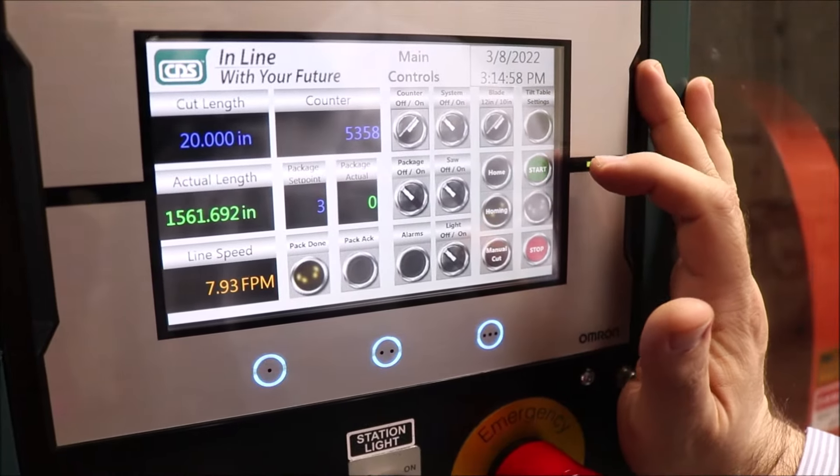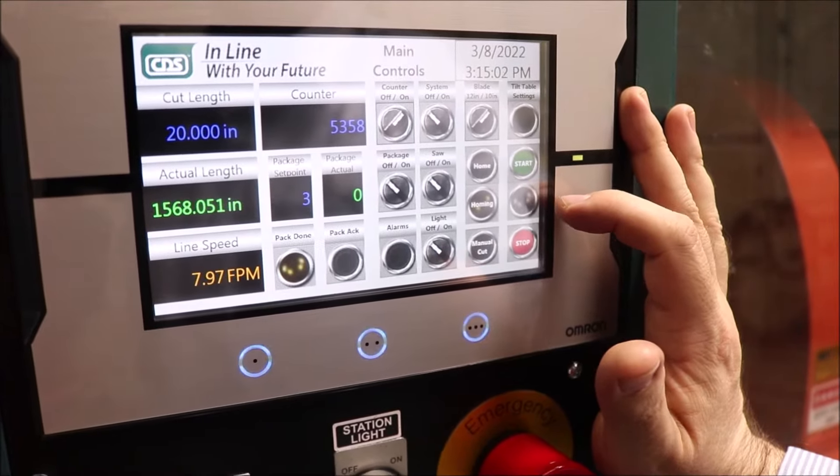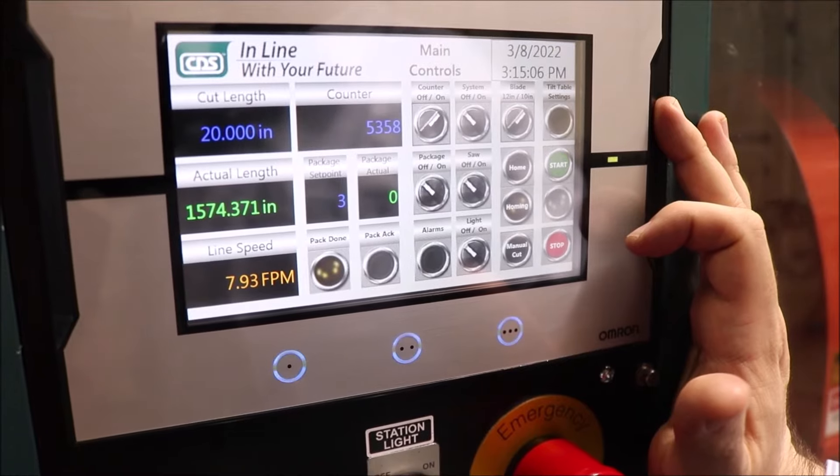Under the tilt table settings, you have the start, the indication of the machine is in start, and the stop button. These are necessary for your automatic functionality.